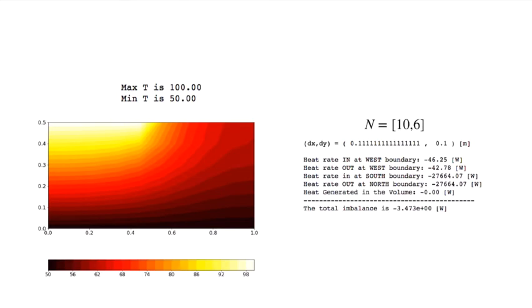Well, I've written a two-dimensional conduction code in Python that I've used to solve this. Now, I'm going to look at this. First, I'll set the temperature here to be 50, and the temperature here to be 50, and the temperature here to be 100. And all of these other boundaries are insulated. So I only have these temperature boundaries here.